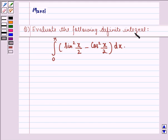evaluate the following definite integral: integral from 0 to π of (sin²(x/2) - cos²(x/2)) dx.